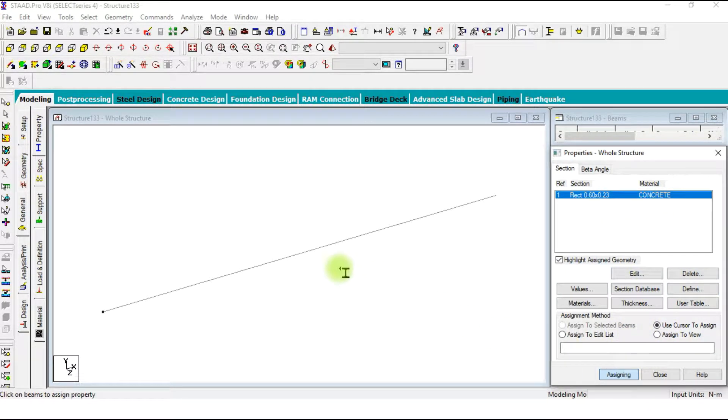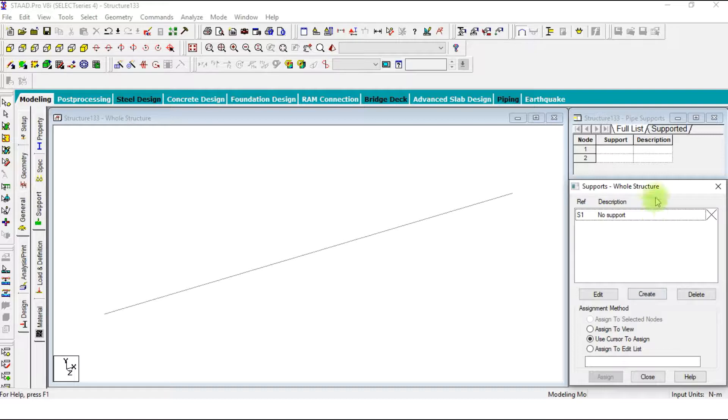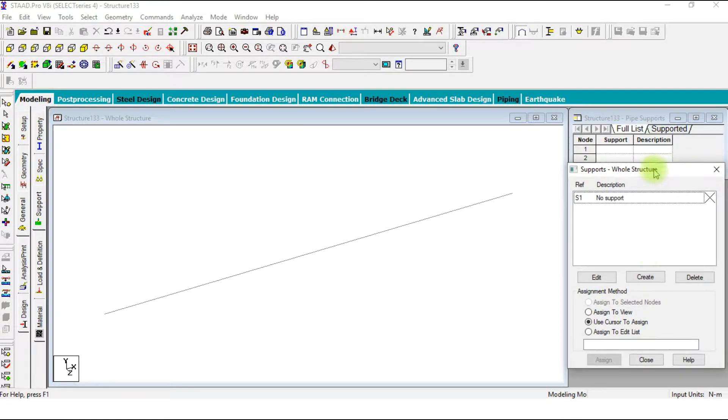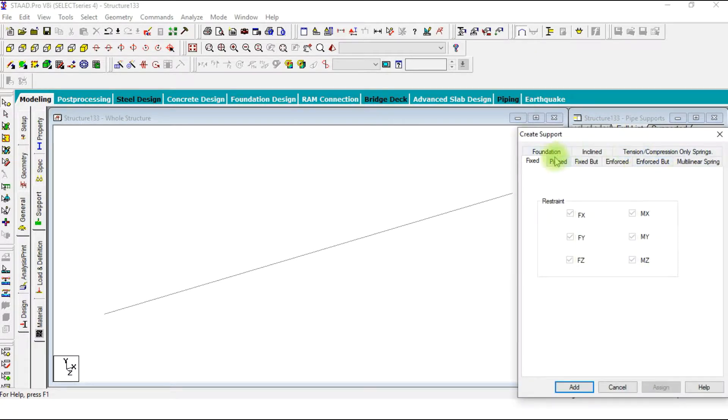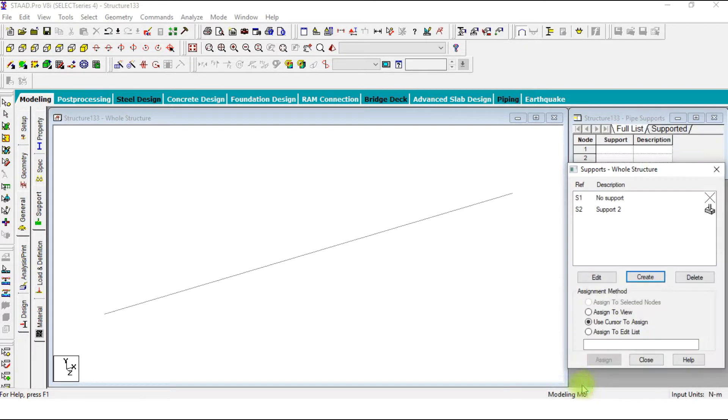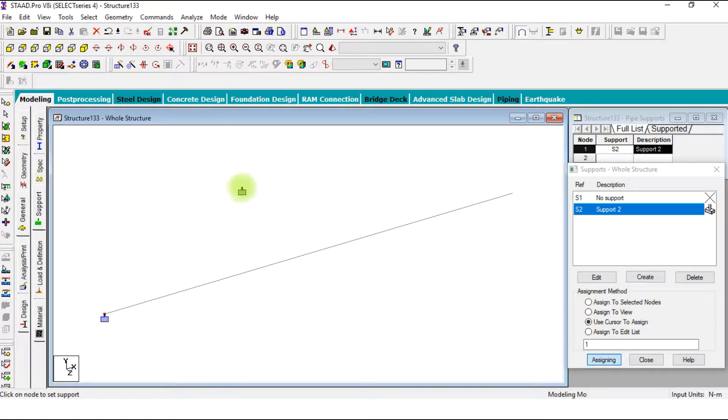Use cursor to assign and assign it. Now we are going to add support conditions. First create a fixed support, edit support, use cursor to assign and assign it to one of the ends.